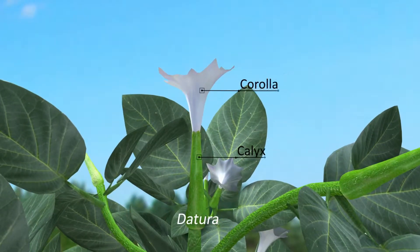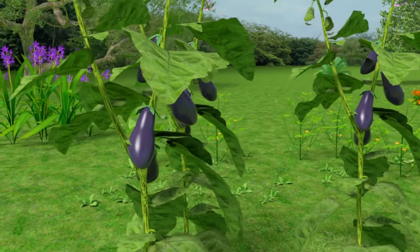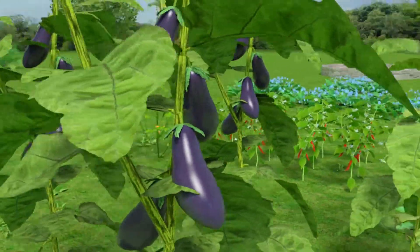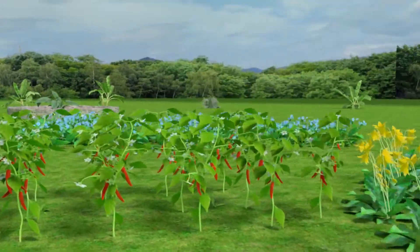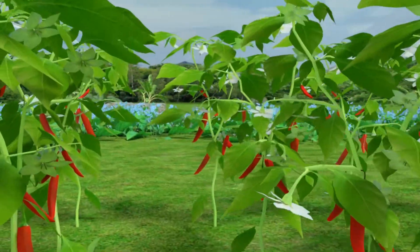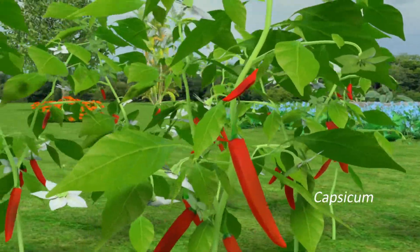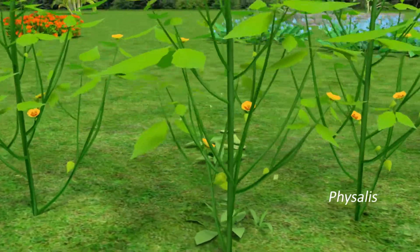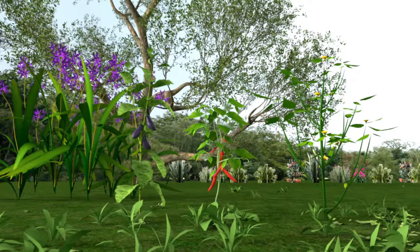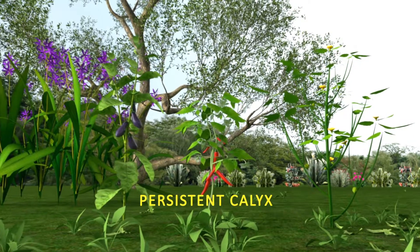Generally, the members of calyx fall off after fertilization. But in the members of Brinjal, Capsicum, and Physalis, calyx remains attached even after fruit formation. That calyx is called persistent calyx.